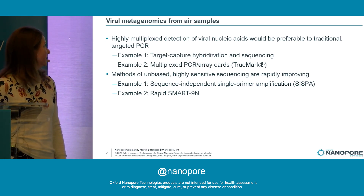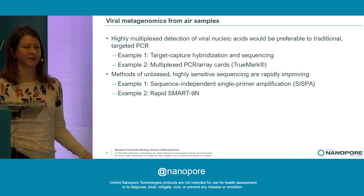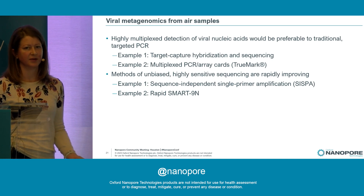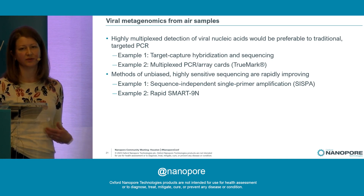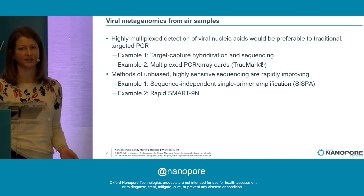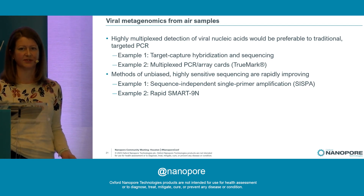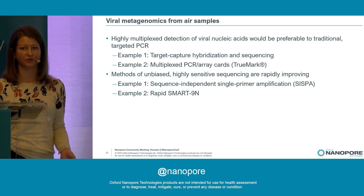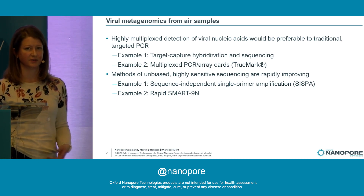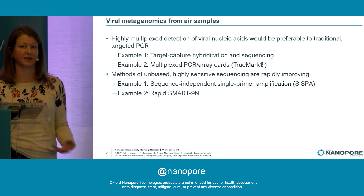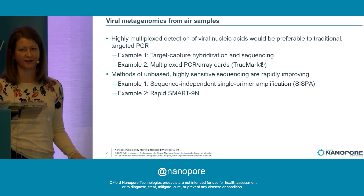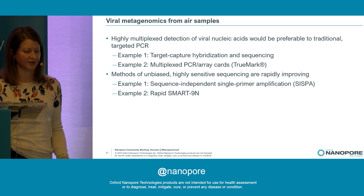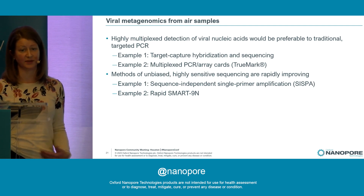So how are we detecting viral metagenomics in air samples? There are a couple of different strategies. There's a targeted strategy where you might use target capture hybridization followed by sequencing, or a multiplex assay such as multiplex PCR. But for those strategies, you really need to know going in what you want to look for — you won't find things you're not looking for. So one of the other options is to use unbiased sequencing, which is what I'm going to talk about today.